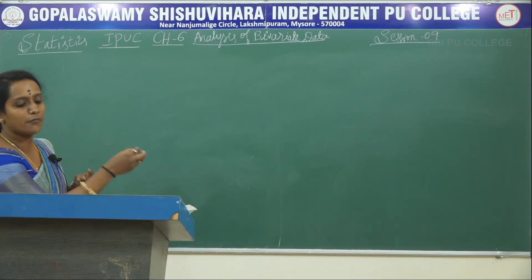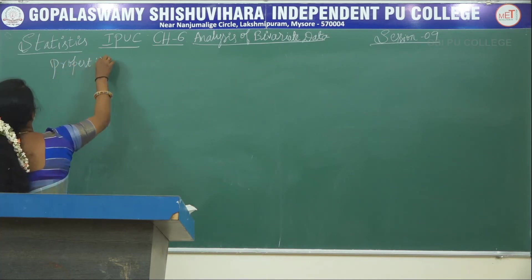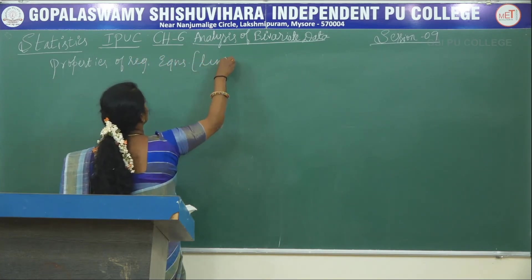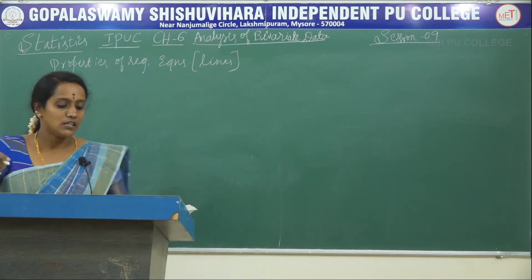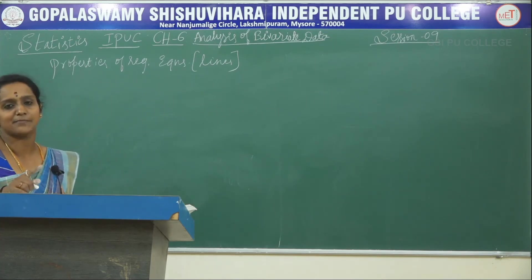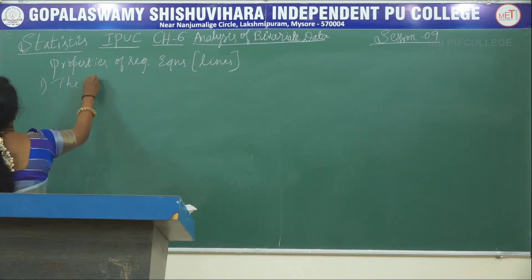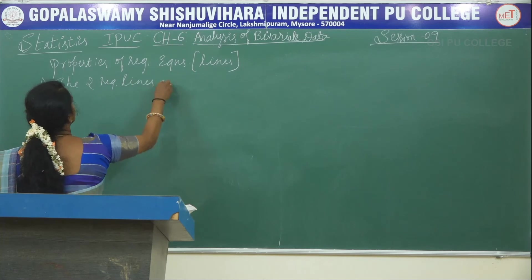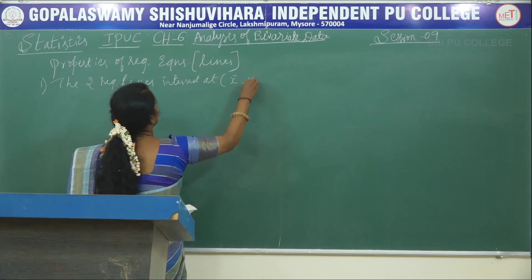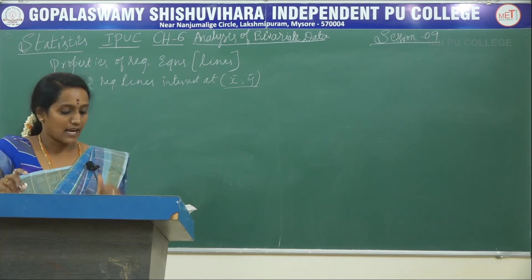Next, properties of regression equations or lines. The first property is that the two regression lines intersect at X̄ and Ȳ, where X̄ and Ȳ are the mean values of X and Y respectively.